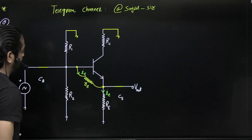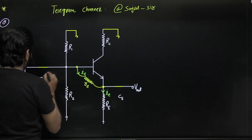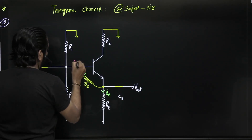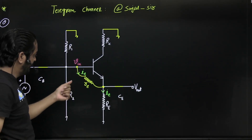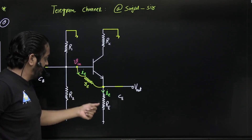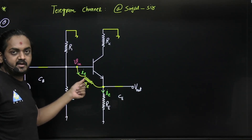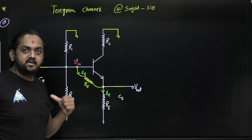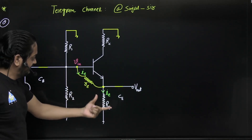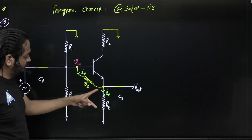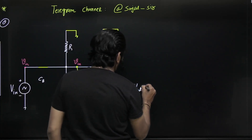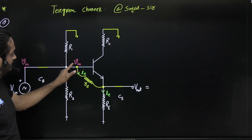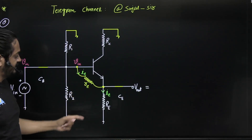We want to find the voltage gain. At this node, this is VIN, so here also this will be VIN. Through small re and capital RE, the current is IE - the same current flows through both. That's why we can say small re and capital RE are connected in series. Total voltage is VIN, and the output voltage is the voltage drop across capital RE.